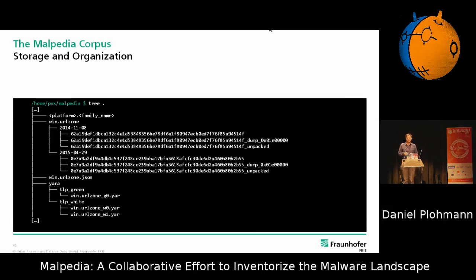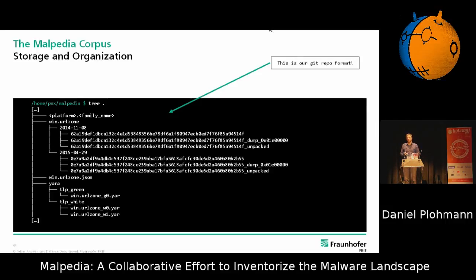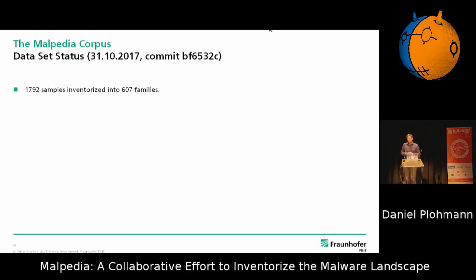The good thing about this file system-like structure is it's basically our Git repository format. So if you want to have the data set, it's as easy as doing a git clone and you have all of the data at once. If you want updates, you do a git pull and then you have the most recent version. That was our vision of having it in a convenient way so you can do the same experiments or whatever you want with that data set. This commit shown here is basically the root commit, and it's also the commit we've been using for all of the analysis I'm going to show in a few minutes — based on almost 1,800 samples with around about 600 families.